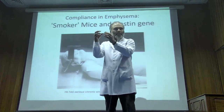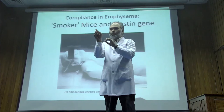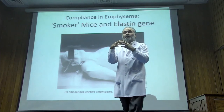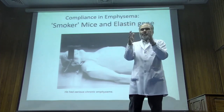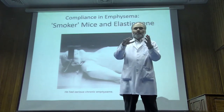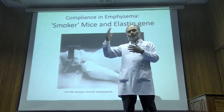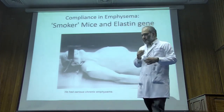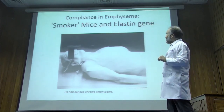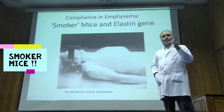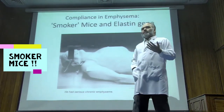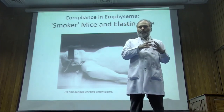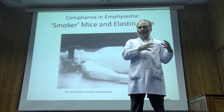In a healthy lung, alveoli look like distinct grapes. In emphysema, they coalesce — they combine to become large balloon-like structures. There is a collapse of architecture; bad things happen to the lung's structural framework. There is literally a breaking off of fibers as the disease progresses. On this point: have you heard of the smoker mice experiment? Mice were exposed to cigarette smoke and developed emphysema over a period of time.